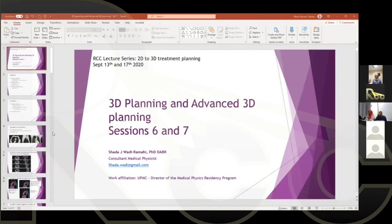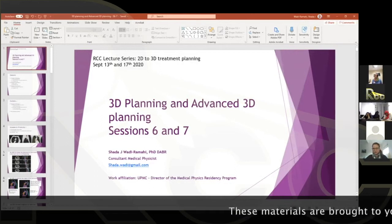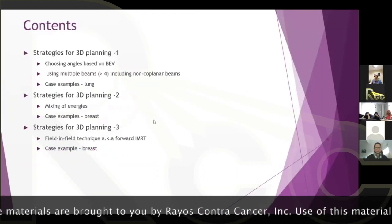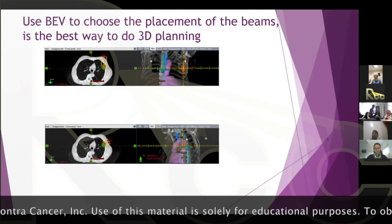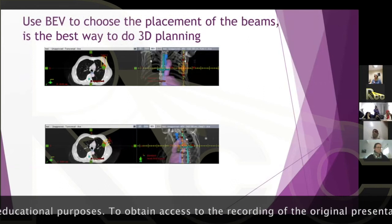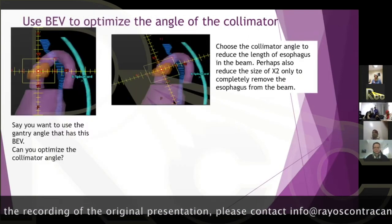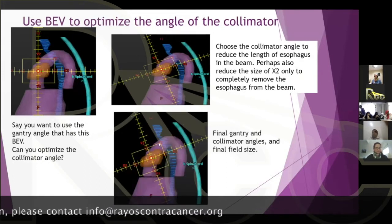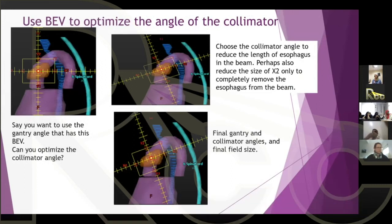We were talking about techniques for 3D planning. One very important technique is the BEV (beam's eye view), which I still use even for stereotactic planning, because whatever technique you're using you still want to make sure your organs at risk are off your beam path. The BEV can be used for gantry angle placement, collimator direction, field size assessment, and ensuring enough margin for penumbra when treating lung tumors.